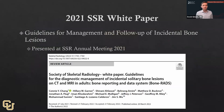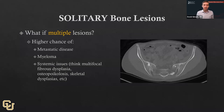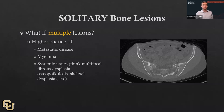A lot of today is based on the 2021 SSR white paper. This was a committee commissioned by the SSR — led by Dr. Wu — put together to develop algorithms for managing these lesions in a way that SSR, as the organization for musculoskeletal imaging, can stand behind. It was presented at the 2021 meeting and published as a manuscript about a year later. This paper specifically addresses solitary bone lesions. If you have multiple lesions, that generally confers a higher chance of metastatic disease, multiple myeloma, or systemic issues like skeletal dysplasias or multifocal fibrous dysplasia.